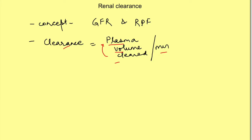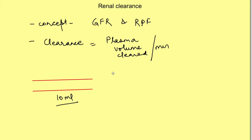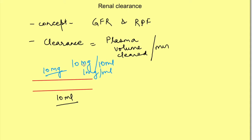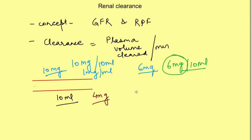We'll understand it by taking an example. Say we have 10 ml of plasma, and in this 10 ml, 10 mg of a substance is present, so the concentration of the substance will be 10 mg in 10 ml, that is 1 mg per ml. Now say 4 mg of the substance is excreted in urine, so 6 mg will be left, and this 6 mg will now be present in 10 ml of the plasma. But we are saying that clearance is the plasma volume which is completely cleared.